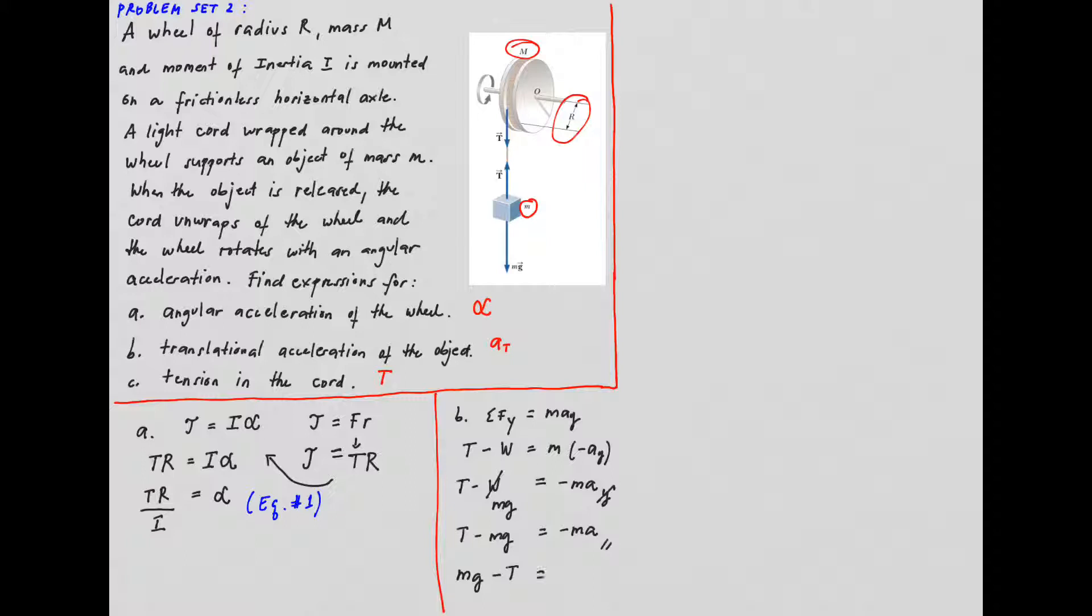mg minus T equals m multiplied by the acceleration. So, this will be our equation number 2.